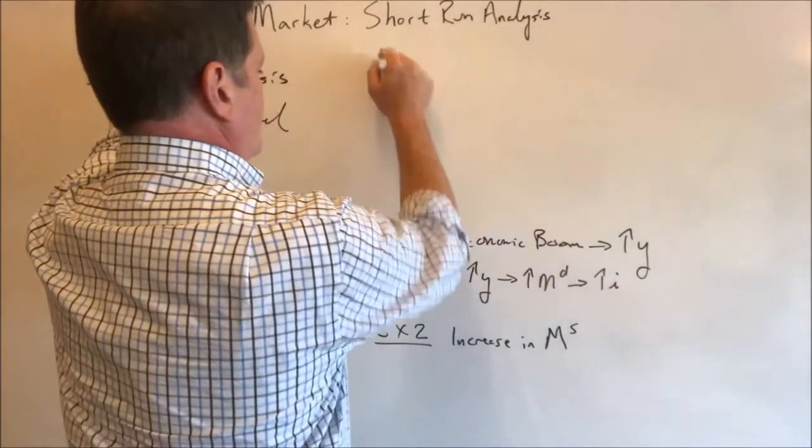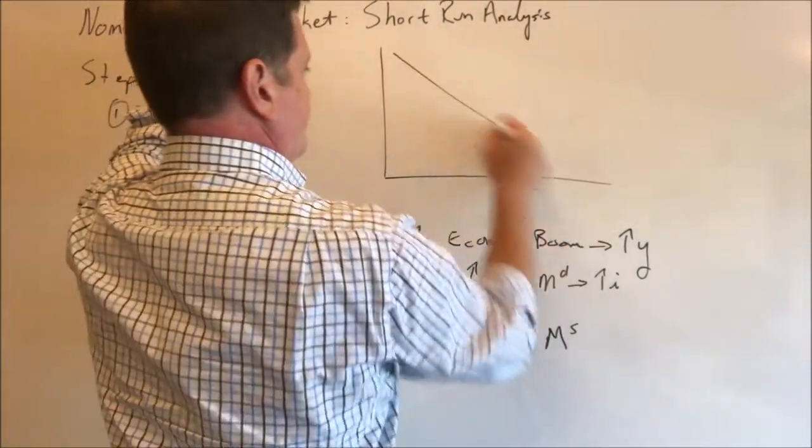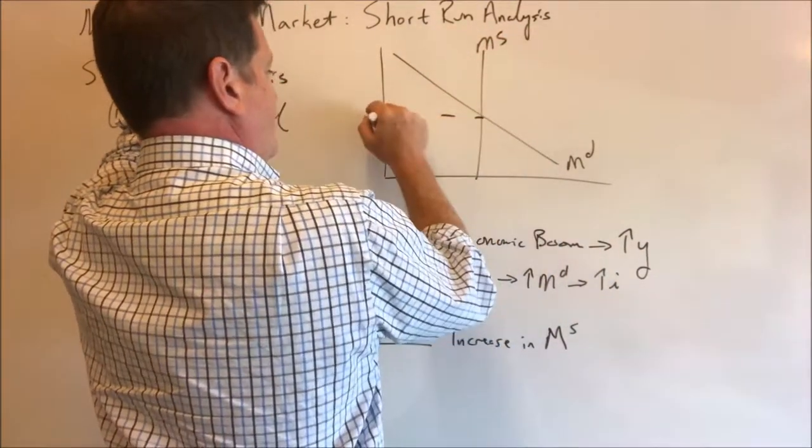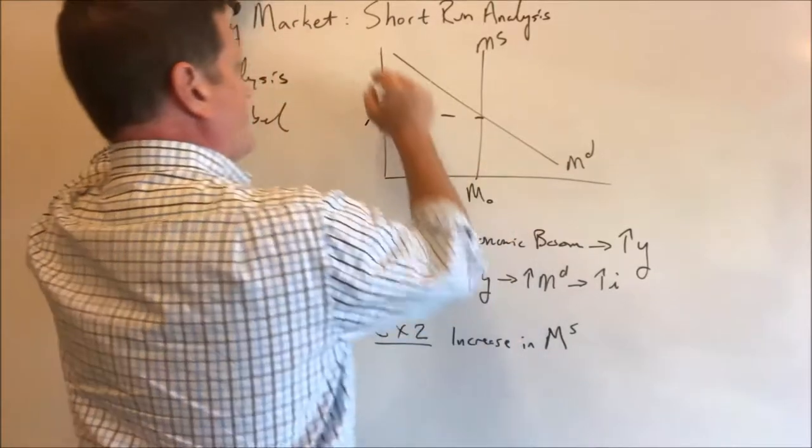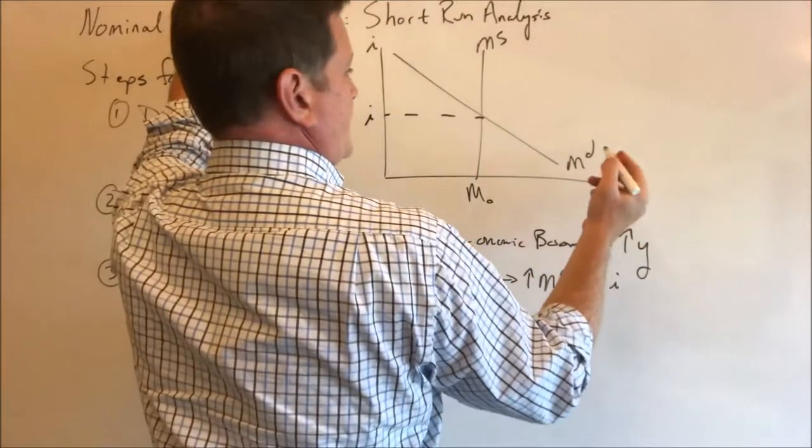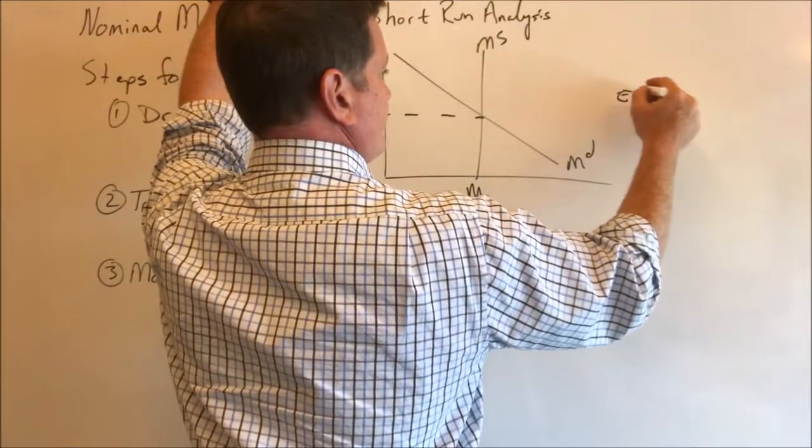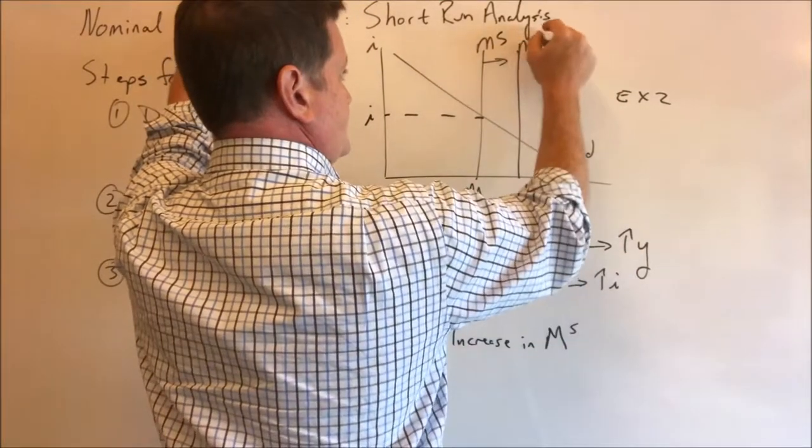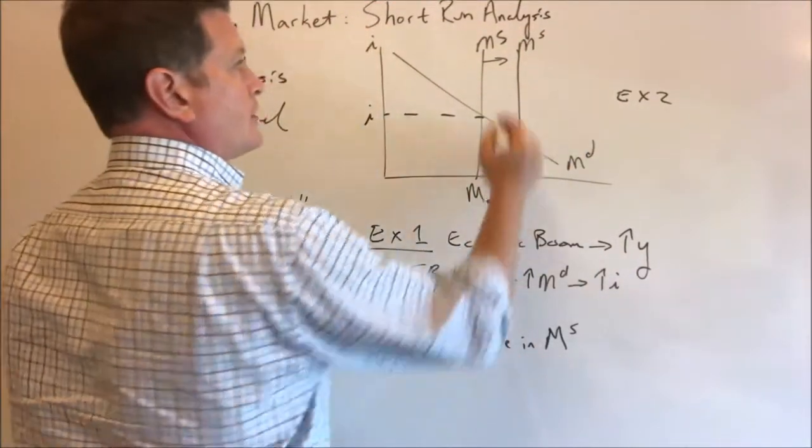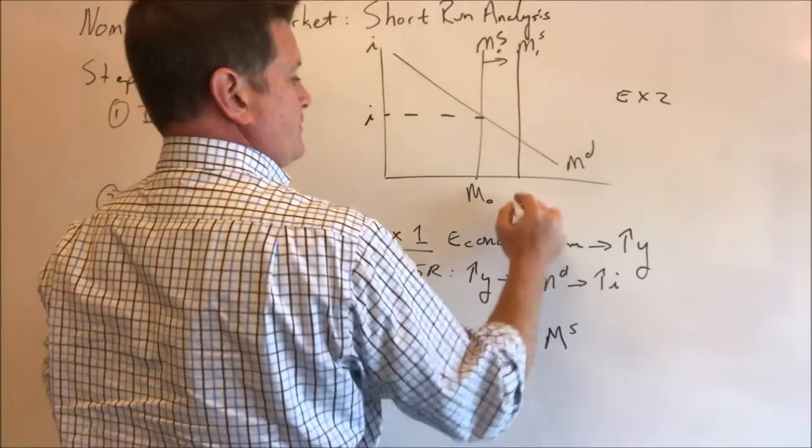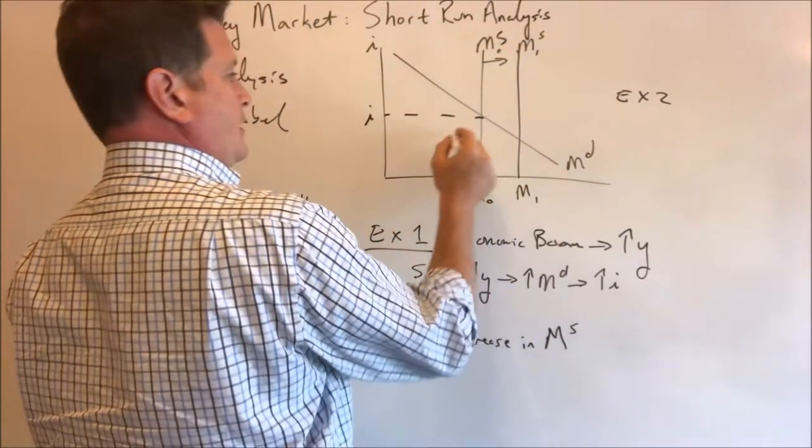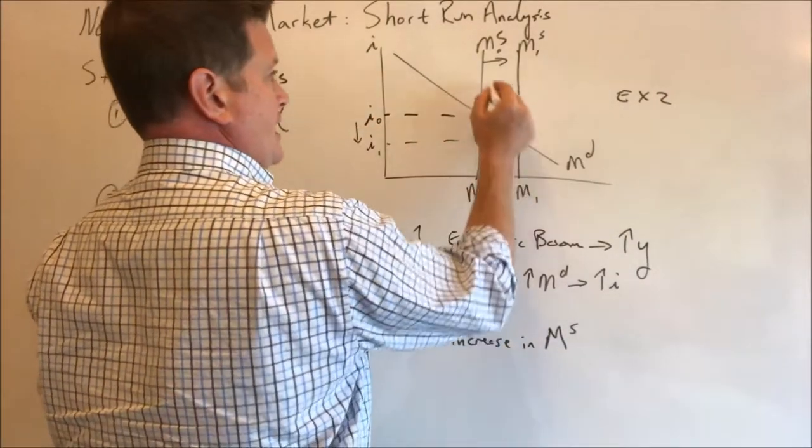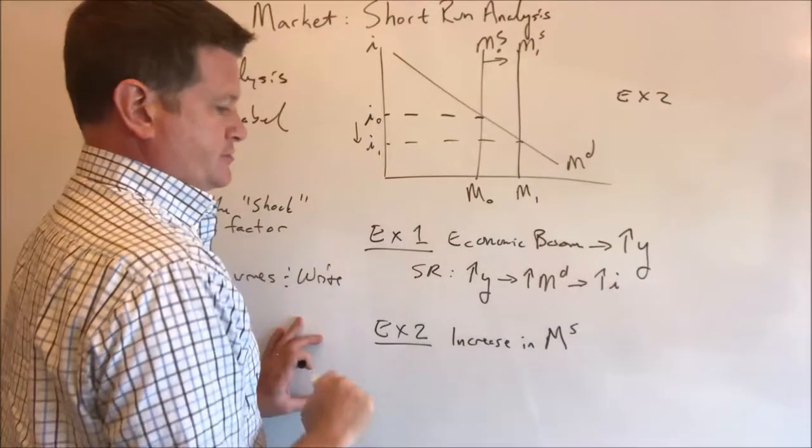Redraw our diagram. In example two, the money supply increases. So we went from here to here. And this pushed down nominal interest rates.